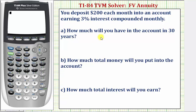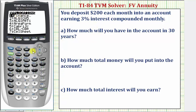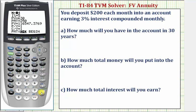To access the solver, we press Apps, then Enter to access the finance menu, and Enter again to access the TVM solver. We'll enter all the values here except future value, which we'll come back and solve for.